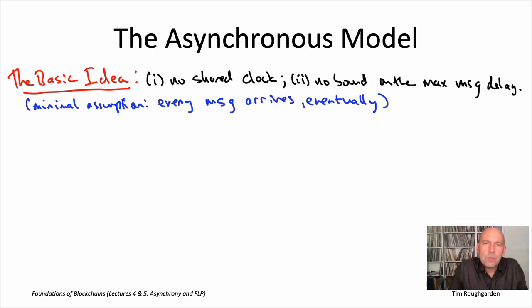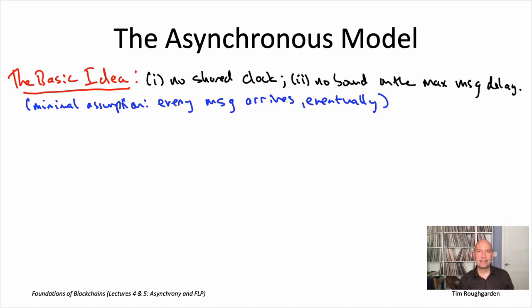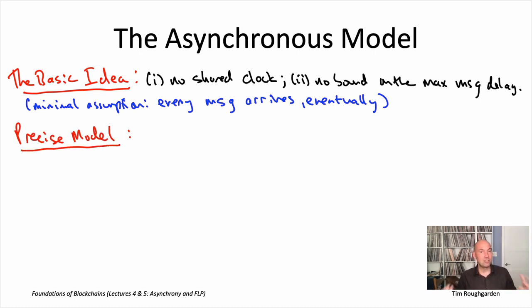When you think about the asynchronous model, what you should store in your mind is probably just these nine or so words written down here. But remember, what we're about to do is prove a formal impossibility result — that no consensus protocol can satisfy certain properties. And to have a formal mathematical proof, we need a formal mathematical model of the asynchronous model.